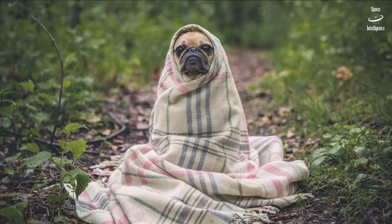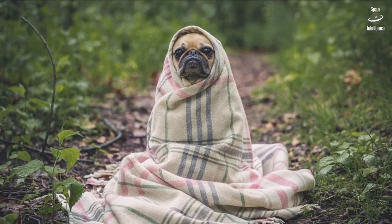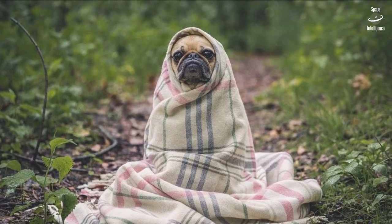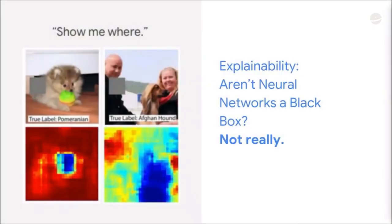Beyond improving the models, we've also been working on having the networks explain how they make a prediction. Taking a play out of the playbook from the consumer world, we started using a technique called 'show me where,' where using an image we generate a heat map of where the relevant pixels are for a particular prediction.